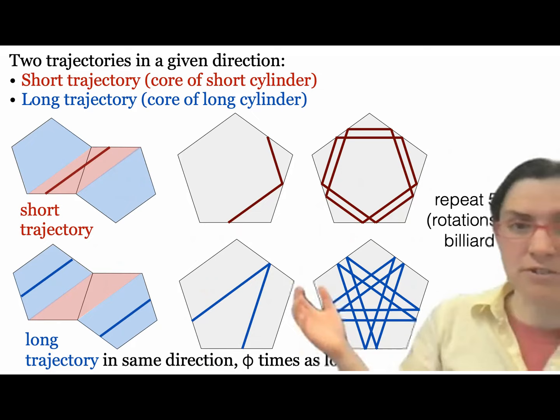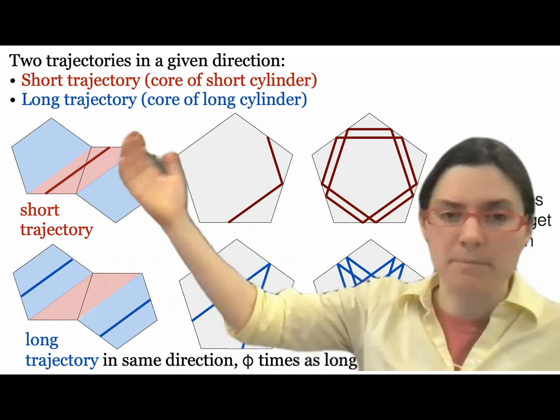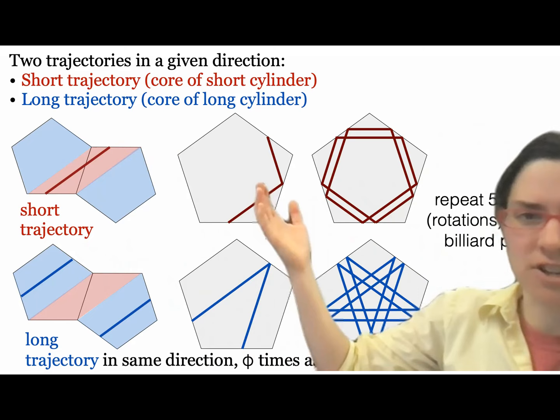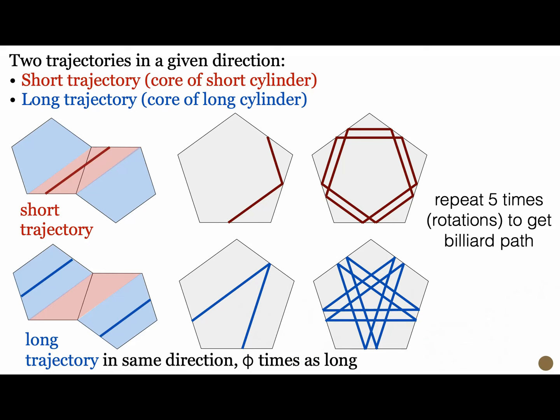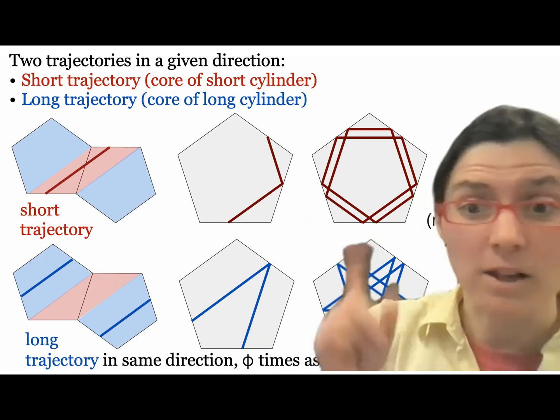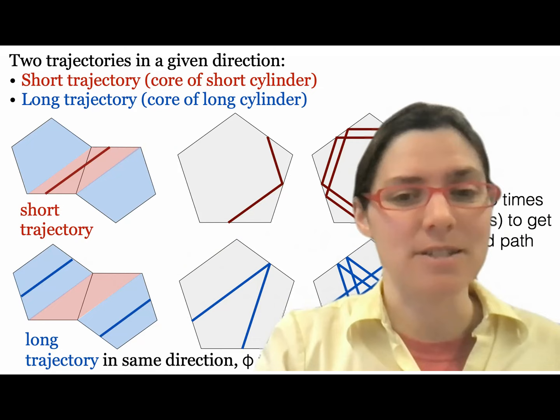If you take this trajectory and fold it up to make a billiard table, you get part of a billiard trajectory. With five copies of it you get the whole closed billiard trajectory. Similarly, folding the other one gives something that, repeated five times, makes the star. This is how we go from surface trajectories back to billiard trajectories. A lot of people just study surfaces and don't fold them up to get billiard trajectories, but I like the billiard trajectories, so I fold.